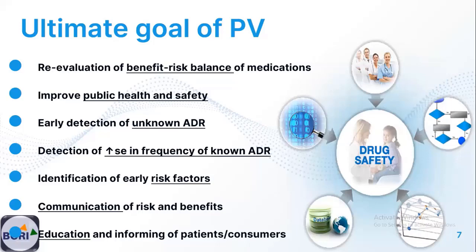A second goal is to improve public health and safety — our ultimate purpose. We also do early detection of previously unknown ADRs that couldn't be found during clinical trials. We detect increases in frequency: for example, if a clinical trial showed one in a thousand chance of an event, but in the open market it becomes ten or a hundred in a thousand, the benefit-risk balance shifts to the riskier side. We also identify early risk factors, communicate risk and benefit, and educate patients and consumers.